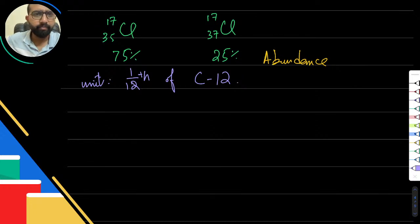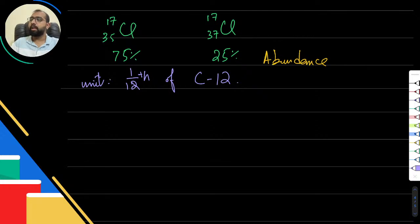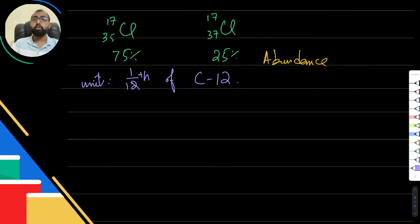Sorry, I got disconnected. So basically, isotopes have this thing called abundance. Abundance means how many atoms exist in the world — for example, 75% for one isotope. Whenever you take a measurement you need a unit, and in this case our unit is one twelfth of carbon-12. Carbon-12 is the one that has a mass of 12, and that is why it serves as the unit.